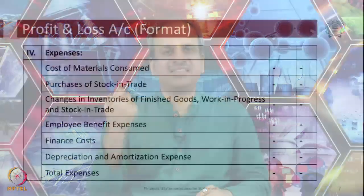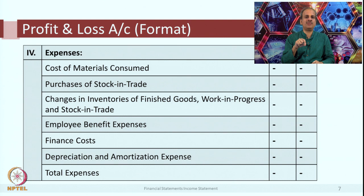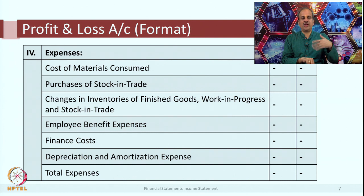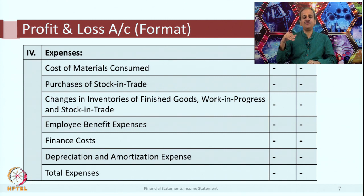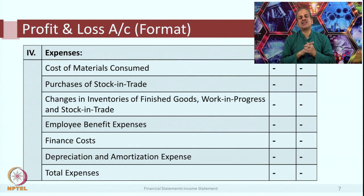Then employee benefits, then financial cost. Financial cost is a slightly unique type of expense because it is related to your business but it is specifically for the raising of funds. If you have taken a loan you will have to pay interest. If you have issued debentures you will have to pay interest. If you have leased an asset — that is, you are taking somebody else's asset for use — then you will have to pay financial cost for the lease, which is also a finance cost. All these items are added in finance cost, and the last item of expense is also unique in nature: that is depreciation and amortization.